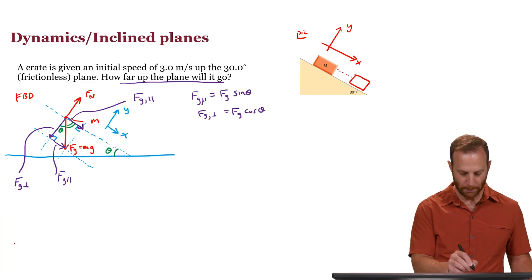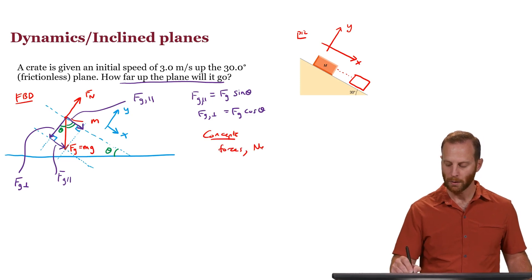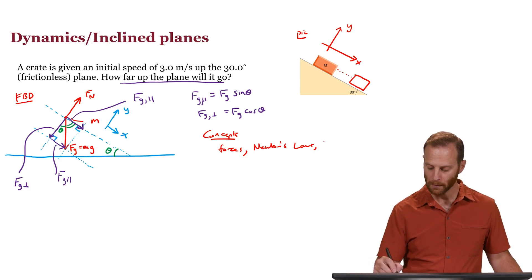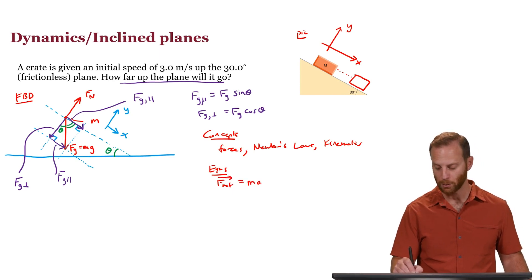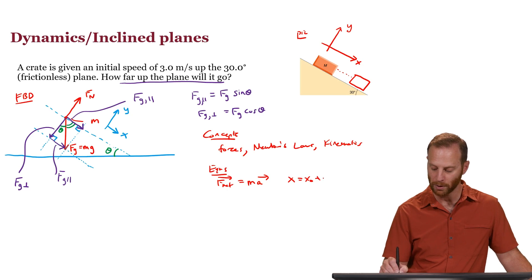We will need to apply a concept, so let's think about the concepts that we might need. We've got speed, we've got forces, we've got Newton's laws, and we also have motion, or kinematics. So the equations that might correspond to those concepts, Newton's laws, Newton's second law in particular tells us the net force acting on an object is equal to its mass times its acceleration. The kinematic equations are the ones that look like this, x is equal to x_0 plus v_0 t plus dot dot dot, v is equal to v_0 plus at, and v squared is equal to v_0 squared plus 2a delta x.